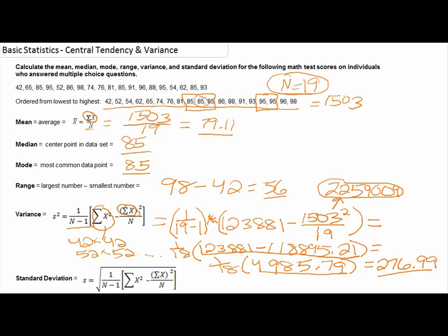Now as I mentioned before, once we calculate the variance, standard deviation is actually quite easy, because the only thing we're doing different is actually taking the square root. So you see here, we have the square root sign, which means all we have to do is take the square root of 276.99, and if we do that, we obtain 16.64. So this is our standard deviation.